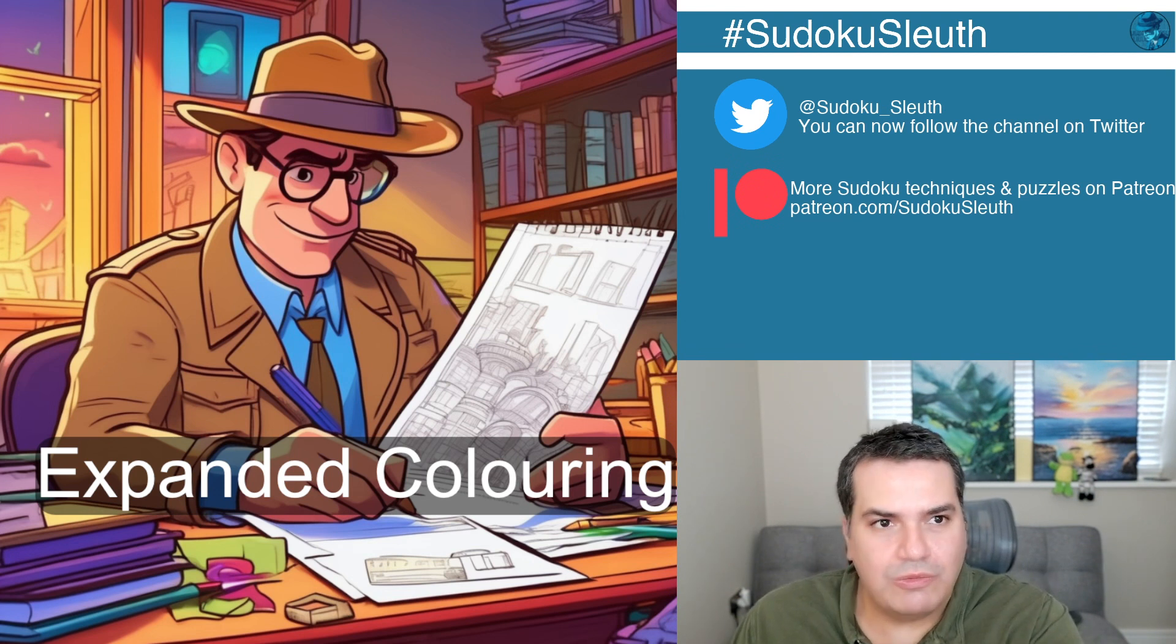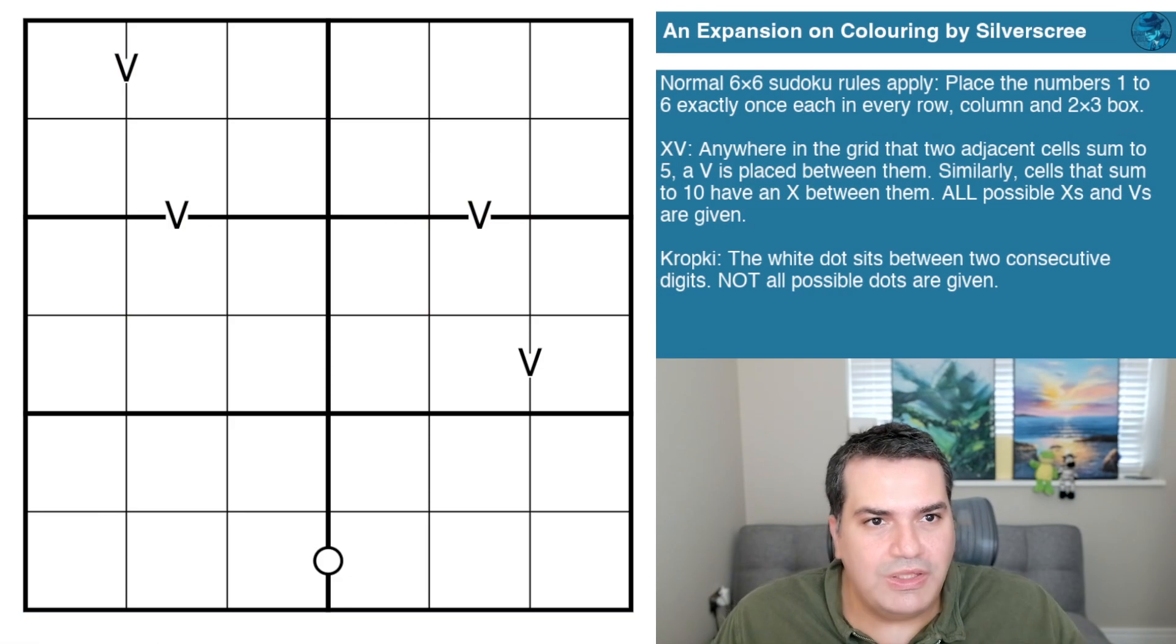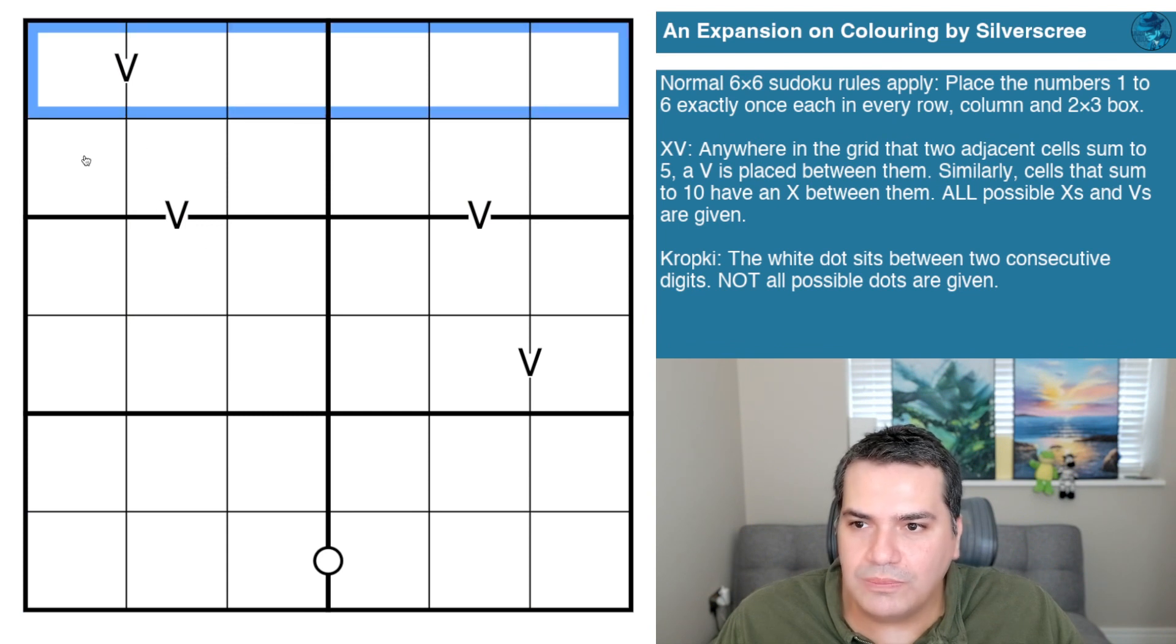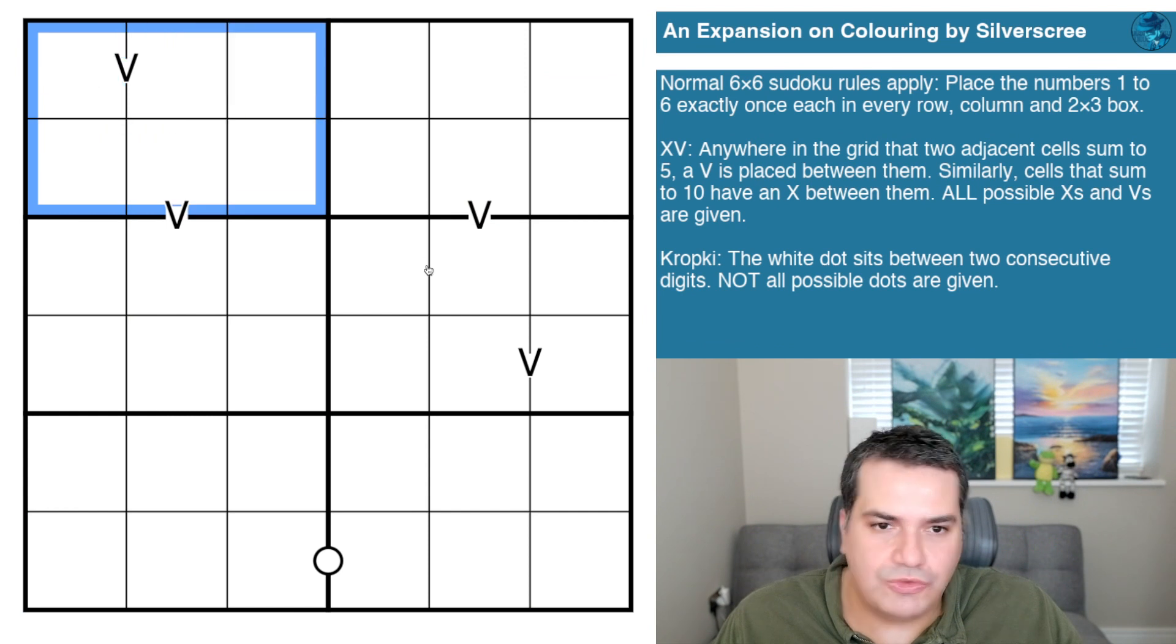Let's take a look at what it is. This is after all why we're all here. We have An Expansion on Coloring by Silverscree. Normal six by six Sudoku rules apply - place the numbers one to six exactly once in every row, every column, and every two by three box.